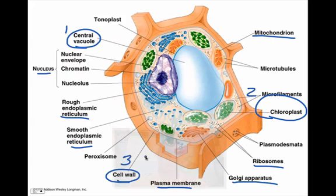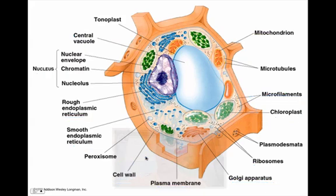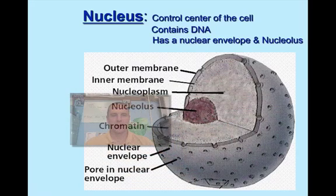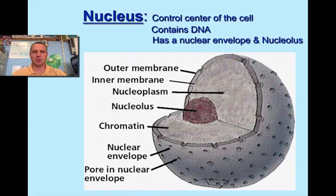And here they are. Hopefully you'll be able to figure those out and list them on a test if I were to ask you to do so. All right, so let's go over each organelle briefly. The first one is the nucleus. The nucleus is the control center of the cell.